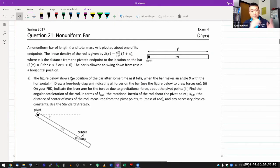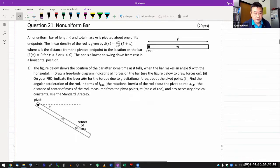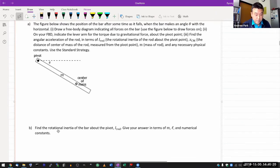I think you have seen the setup exactly like this in the lecture, and this is the simpler setup where the question like find the rotation inertia of the bar about the pivot is easier to answer.